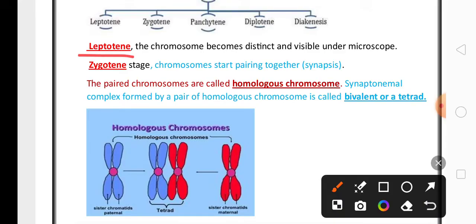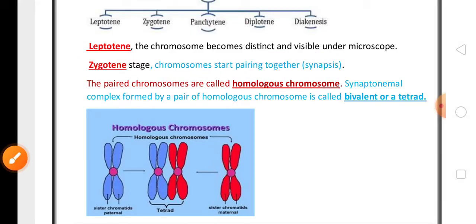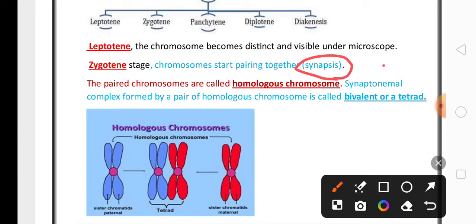In leptotene, chromosomes become distinct and visible under a microscope. In zygotene, chromosomes start pairing together, which is called synapsis. The definition of synapsis is very important for one mark: pairing of chromosomes is called synapsis.